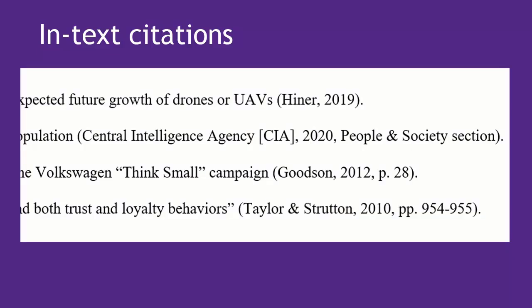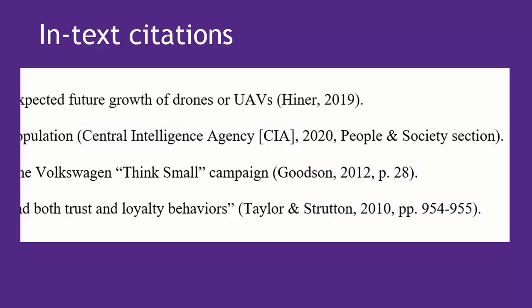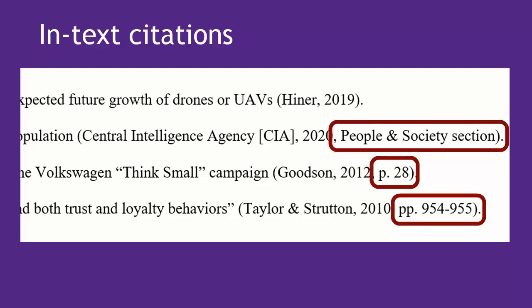Here are our sample in-text citations. If you have two authors, use an ampersand between the two names. You can also have a corporate author like the Central Intelligence Agency. If it has a common abbreviation like CIA, include that in square brackets the first time you use it, then just use CIA for subsequent citations. For the year, you can list n.d. if that's all you have. Finally, if you're using a direct quote or paraphrasing from a single page, always include the page number with p. before it, or pp. if it's multiple pages, or the paragraph number or section heading if there are no pages.